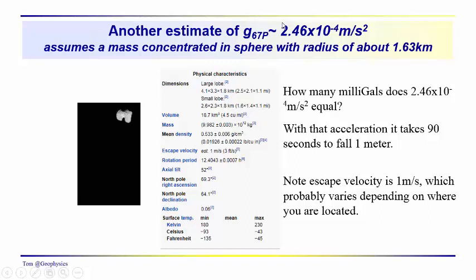And so what I did here was I just assumed that this mass was all concentrated in a sphere, and I think an equivalent sphere had a radius of about 1.63 kilometers. And we got an acceleration of 2.46 times 10 to the minus fourth meters per second squared. And you should be pretty good at converting meters per second squared to milligals. If you do, you multiply this by 10 to the fifth milligals per meter per second squared to give you 24.6 milligals. With this acceleration, it takes 90 seconds to fall one meter. And the escape velocity is just one meter per second.